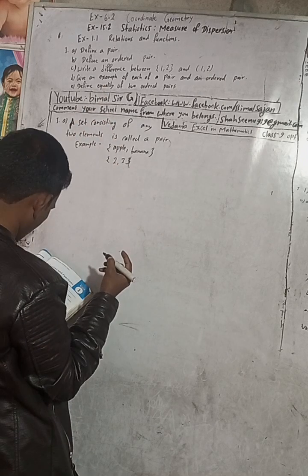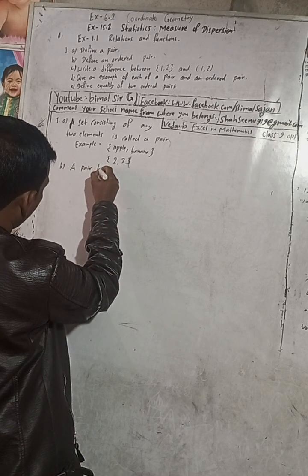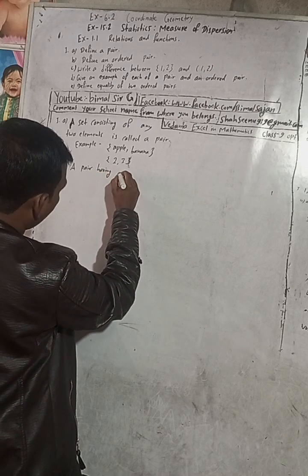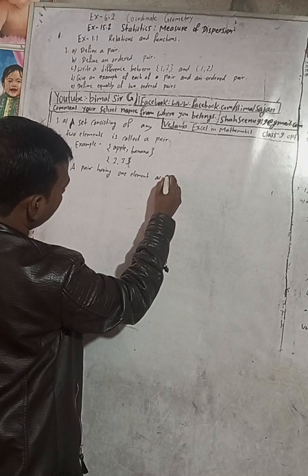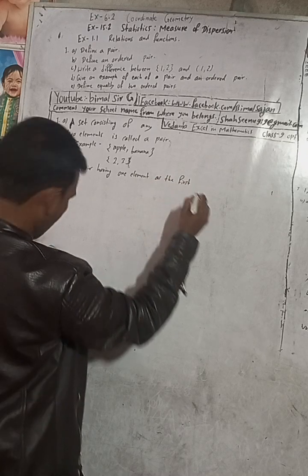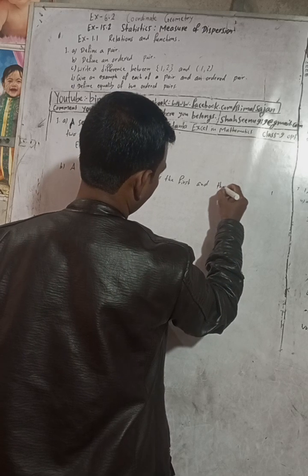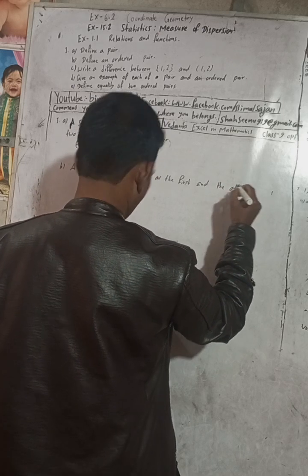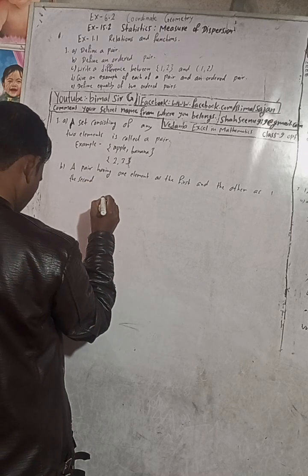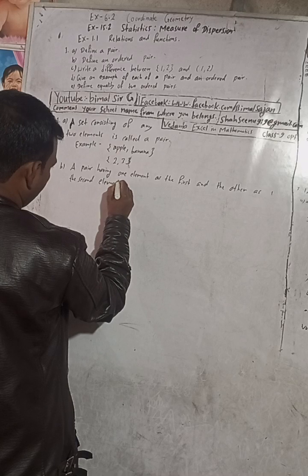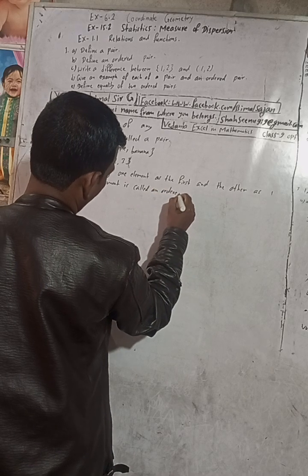Now question 1b: Define an Ordered Pair. A pair having one element as the first and the other as the second element is called an Ordered Pair.